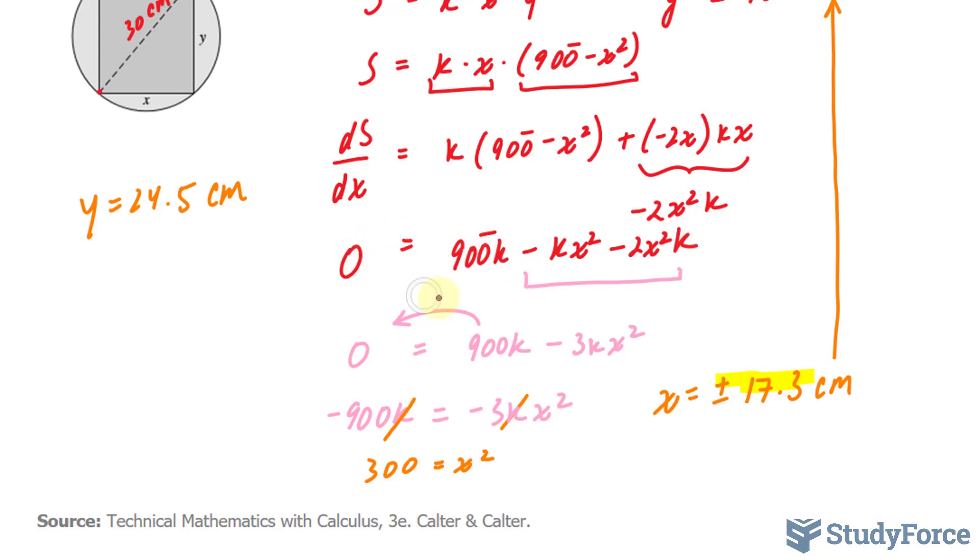So let's go ahead and find the second derivative of this function, which is not hard to do. We'll write down d squared s over dx. This becomes zero. It's a constant. Taking the derivative of a constant is zero.